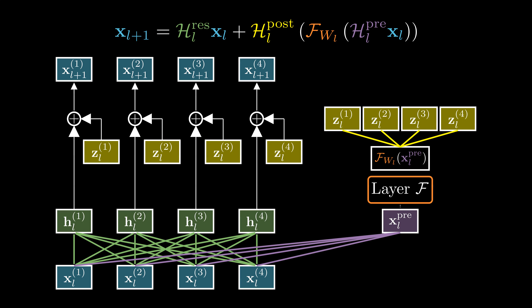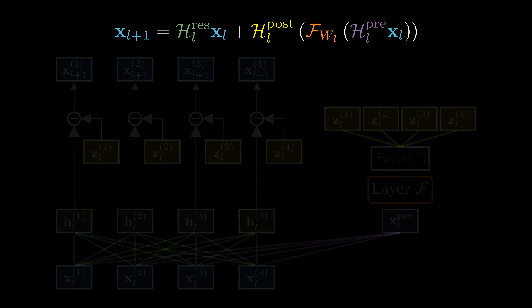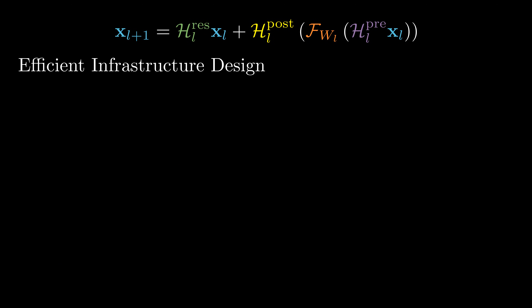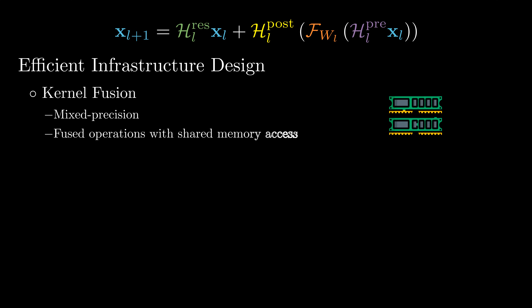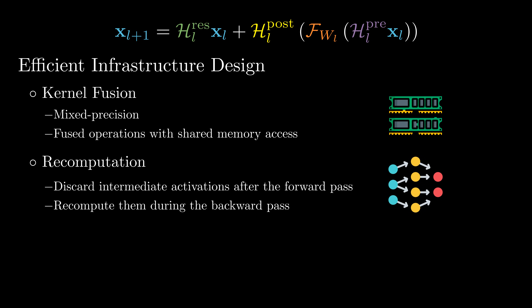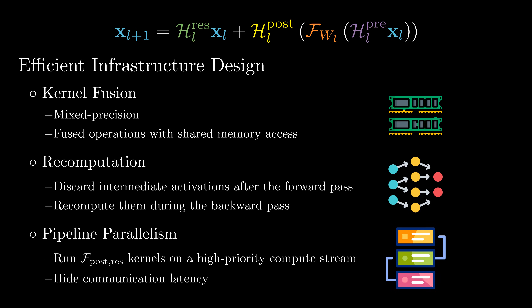But the expanded residual streams add significant GPU memory footprints and slow down training due to excessive memory I/O access. The DeepSeq paper proposes three efficient infrastructure designs to mitigate this. First, reordering normalization with fused operations and shared memory access using specialized kernels greatly reduces redundancy and resource bottlenecks. Second, freeing intermediate activations after the forward pass and recomputing them during the backward pass reduces memory usage through efficient block sizing and pipeline synchronization. Third, scheduling pipeline and kernel executions to maximize hardware usage by overlapping computation and communication. With an expansion rate of 4, the training overhead only increases by 6.7%.